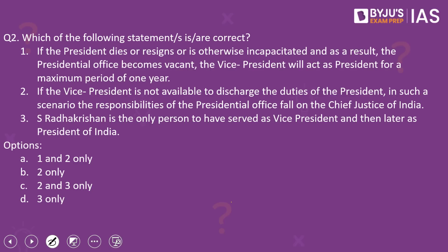Moving on to the second question: which of the following statements is or are correct? The first statement reads: if the president dies, resigns, or is otherwise incapacitated and as a result the presidential office becomes vacant, the vice president will act as president for a maximum period of one year. The second statement reads: if the vice president is not available to discharge the duties of the president, the responsibilities of the presidential office fall on the Chief Justice of India. The third statement: S. Radhakrishnan is the only person to have served as vice president and then later as president of India. Please have a look at the options given.